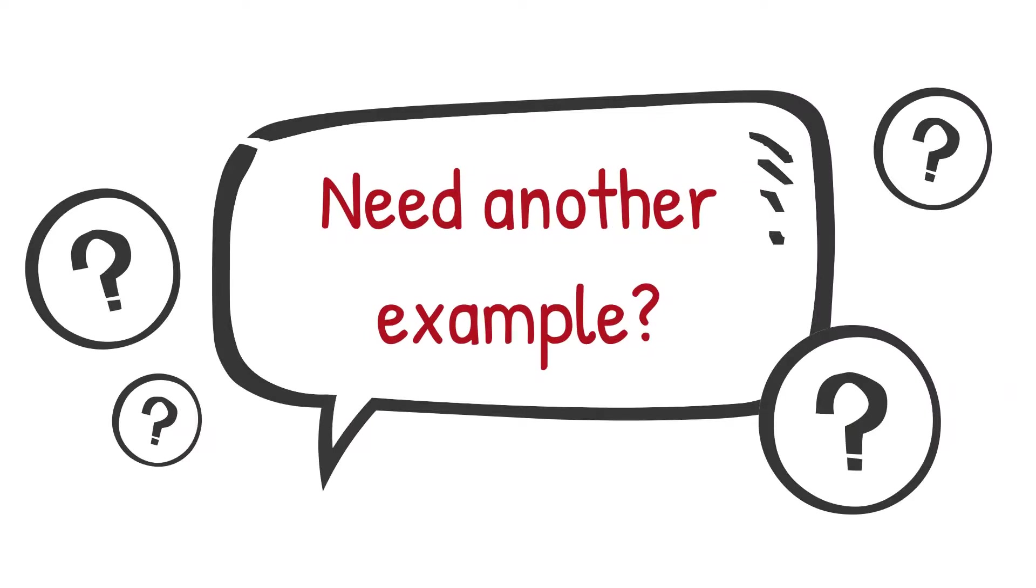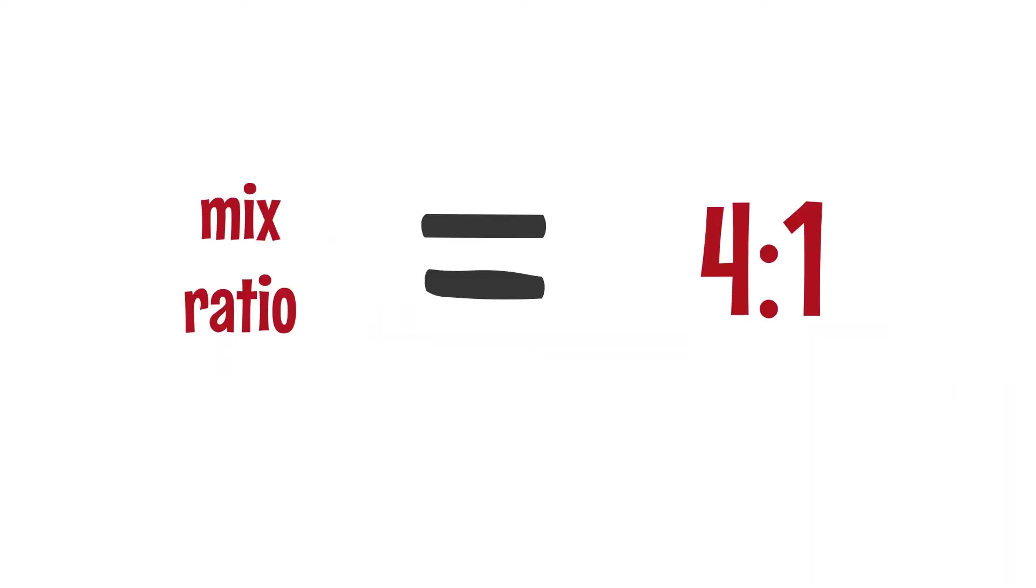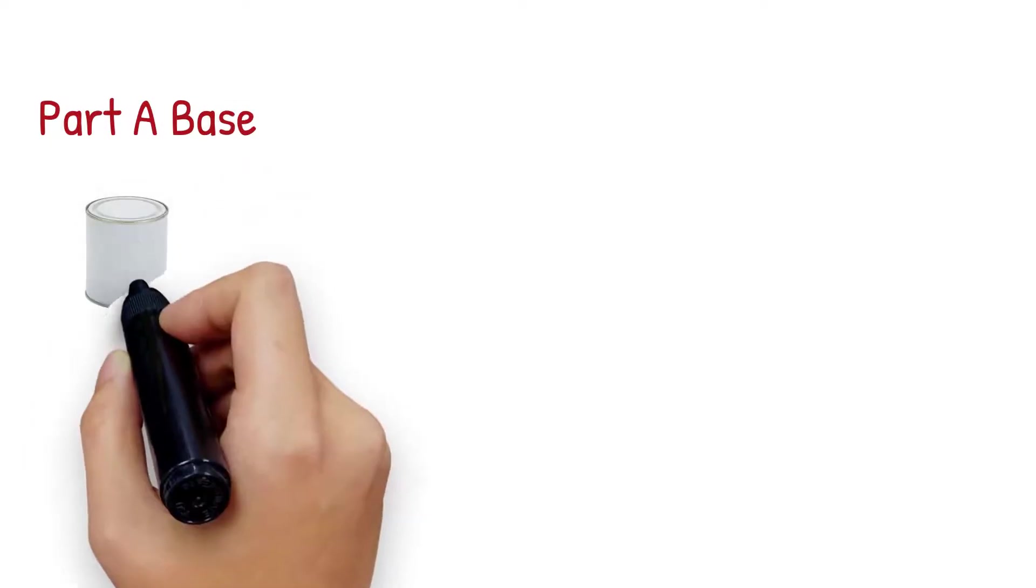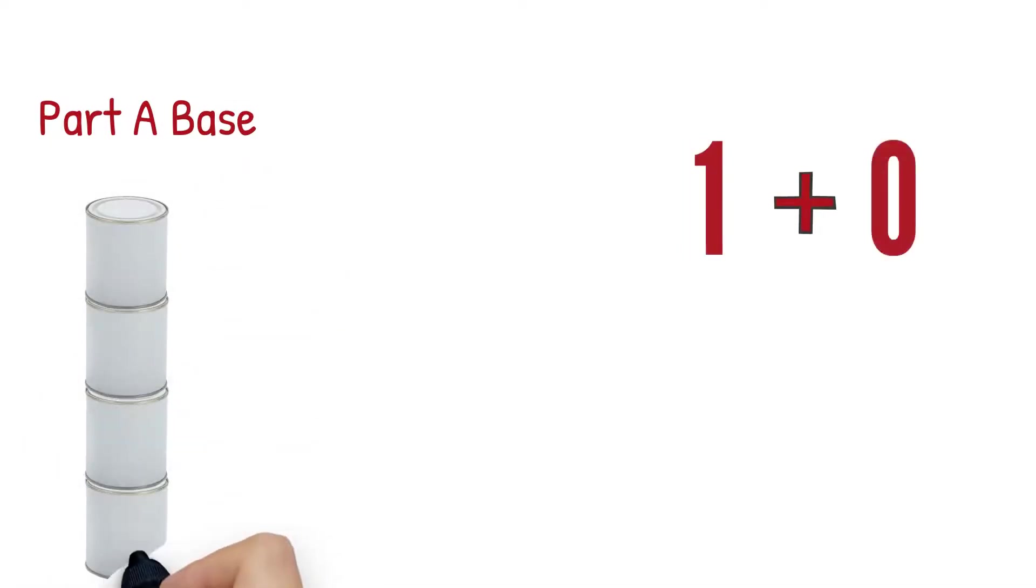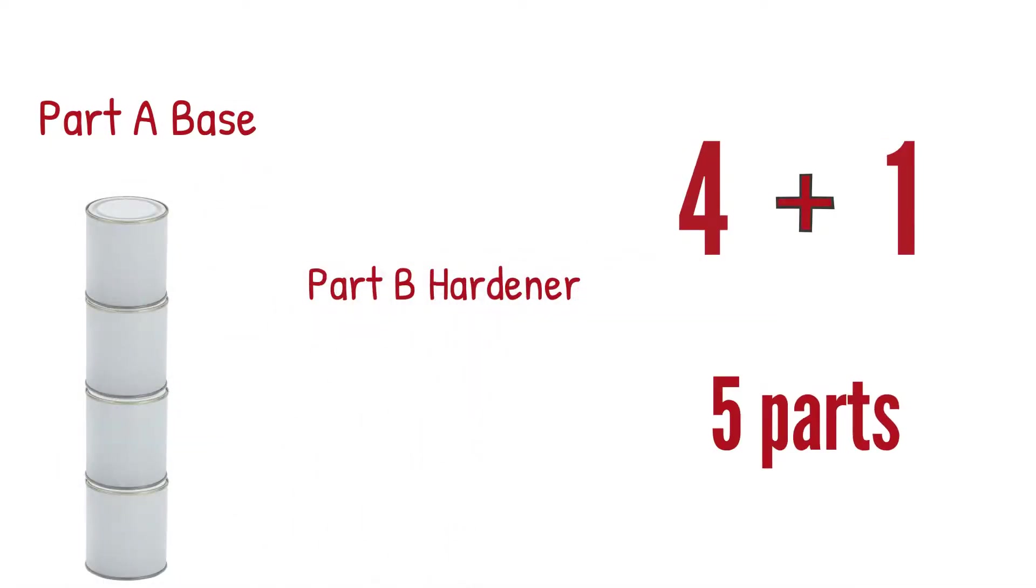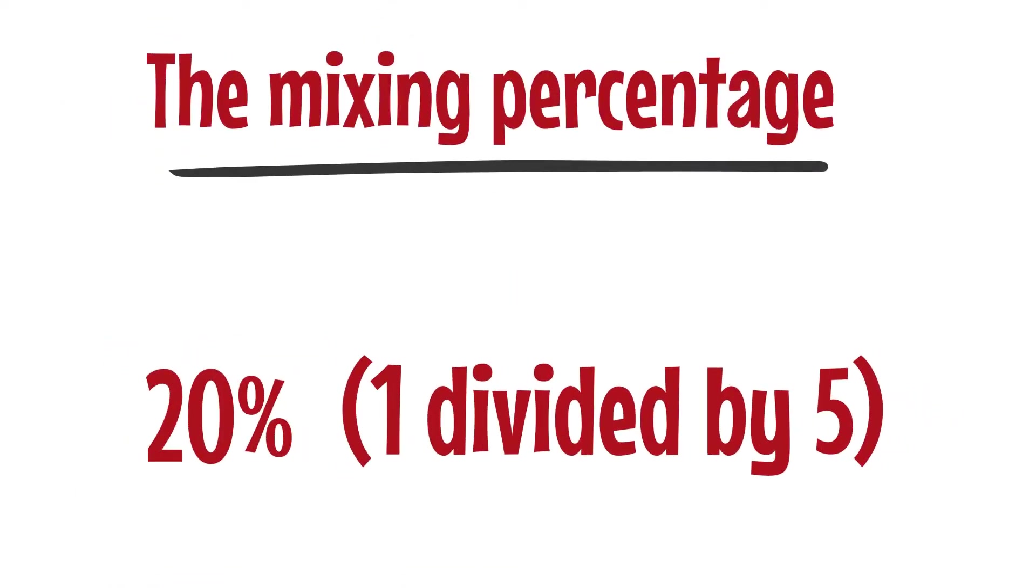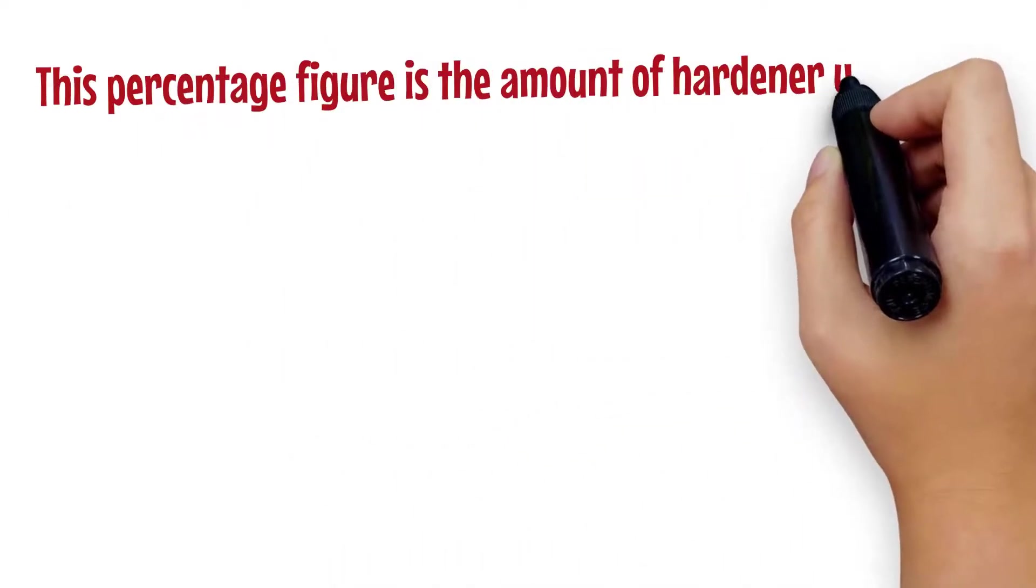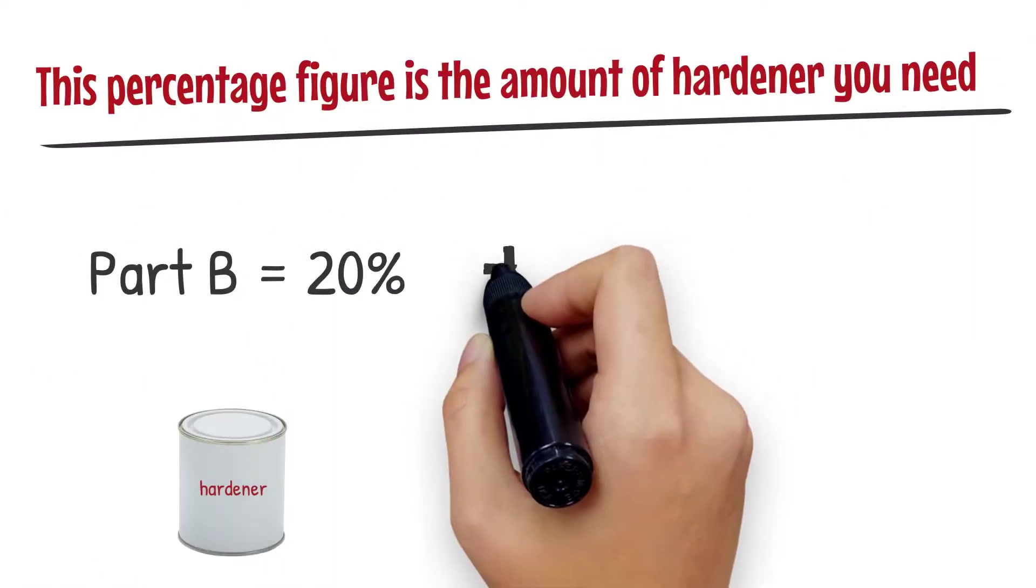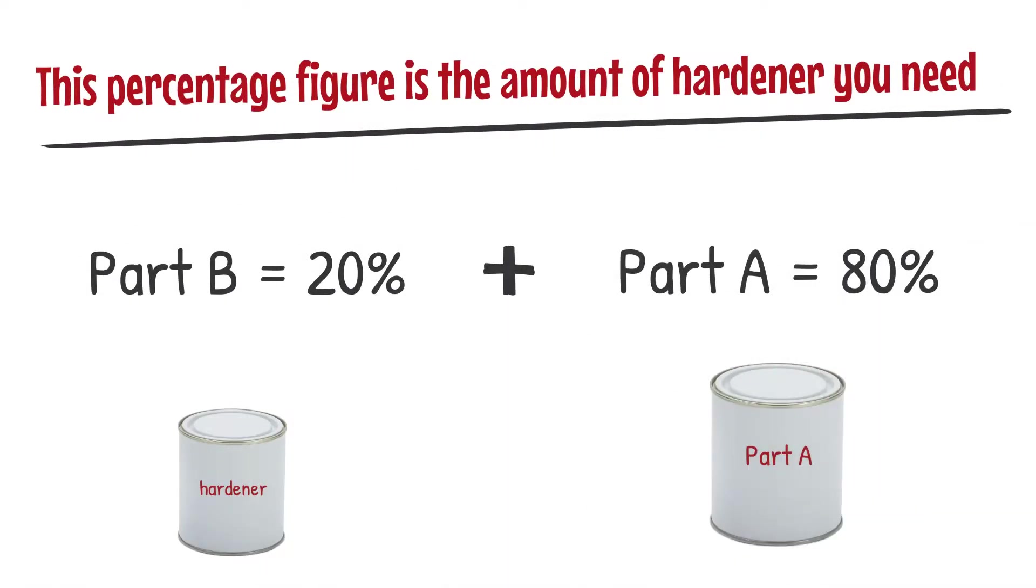Need another example? If your mix ratio is 4 to 1, or 4 parts Part A base to 1 part Part B hardener, there are 4 plus 1, or 5 parts. The mixing percentage is 20%, 1 divided by 5. This percentage figure is the amount of hardener you need. The other 80% is the amount of Part A base you need.